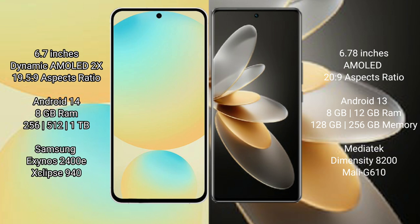The Samsung Galaxy S24 FE runs on the Android 14 operating system, while the vivo V27 Pro runs on Android 13. The Samsung Galaxy S24 FE comes with 8GB RAM and 128GB or 256GB or 512GB internal storage options.